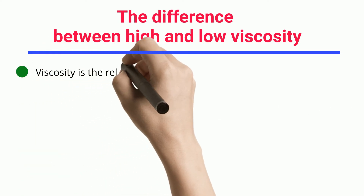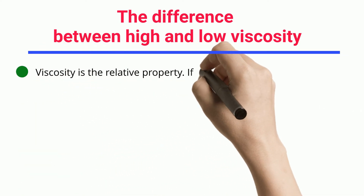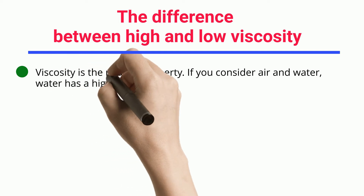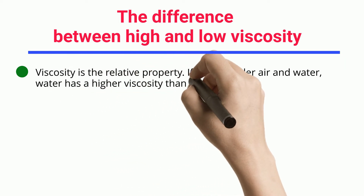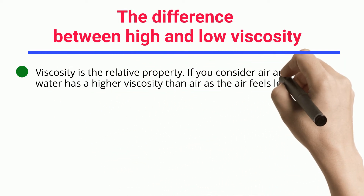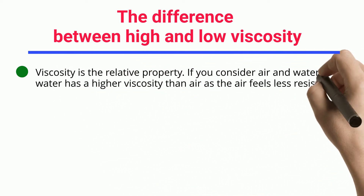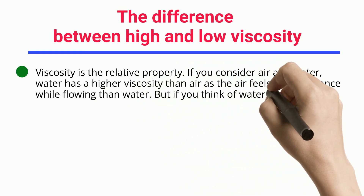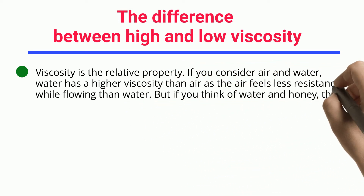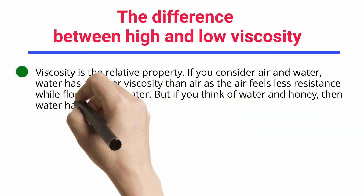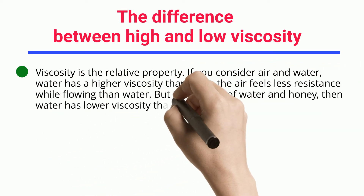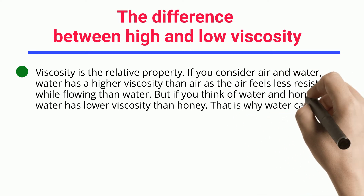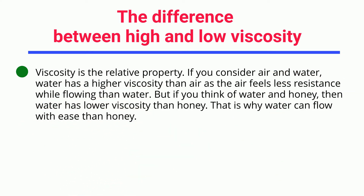Viscosity is a relative property. If you consider air and water, water has a higher viscosity than air, as air feels less resistance while flowing than water. But if you think of water and honey, then water has lower viscosity than honey. That is why water can flow with more ease than honey.